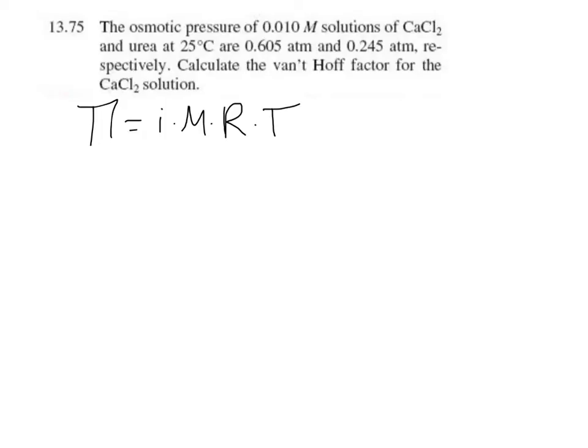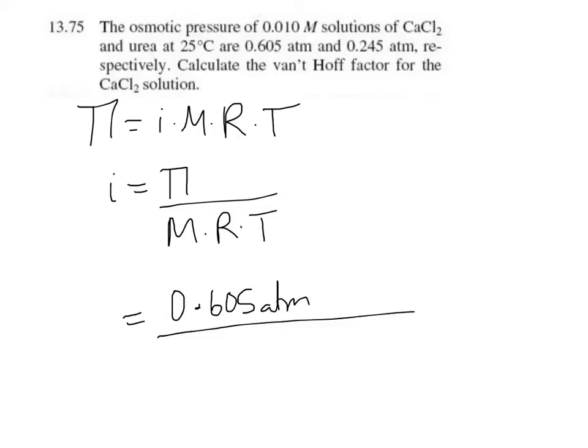So we're asked to calculate the Van't Hoff factor, and there's a couple of ways we can do this. One way is we can simply plug and chug away - we could rearrange our equation. We're looking for the calcium chloride here, so we can say let's just take what's given in the problem: the calcium chloride's osmotic pressure, so that's 0.605 atmospheres.